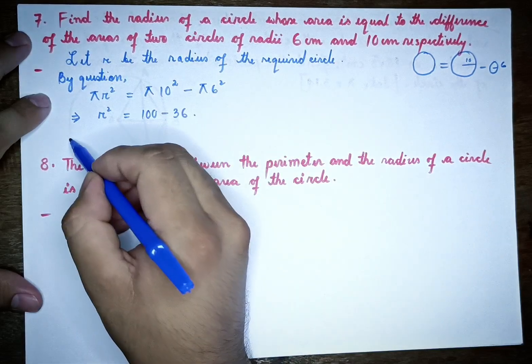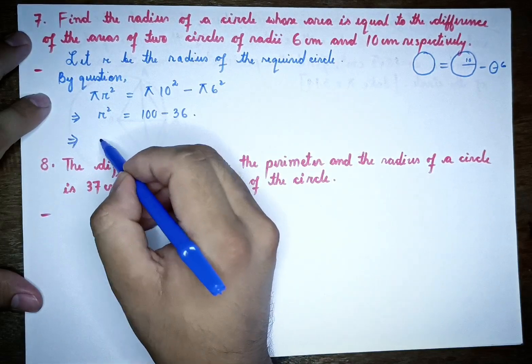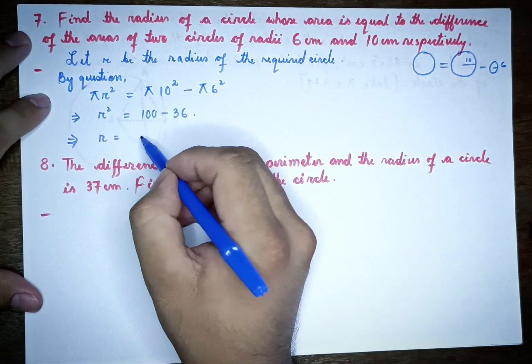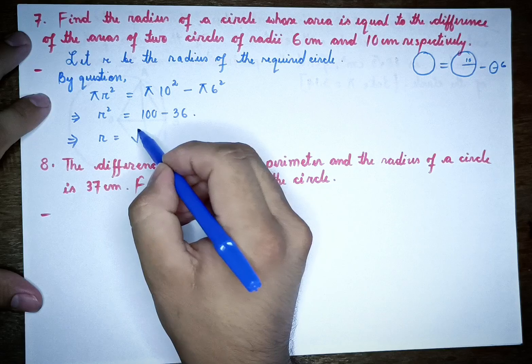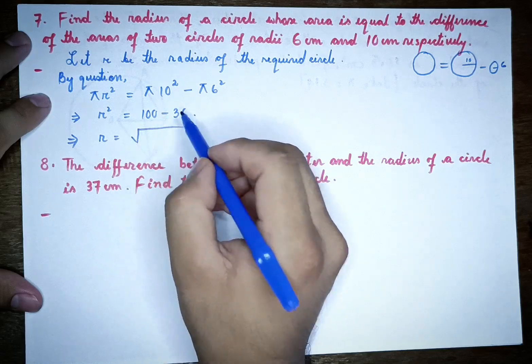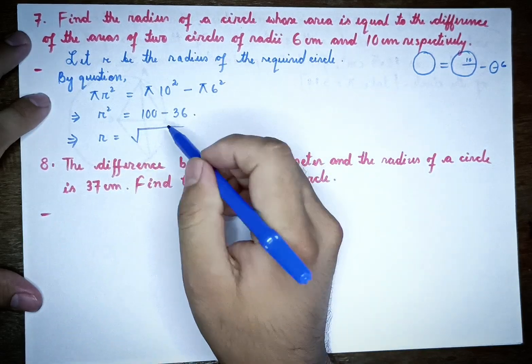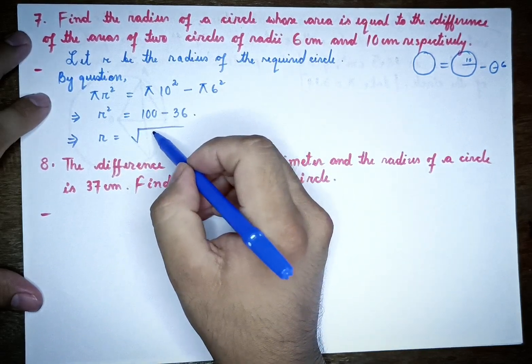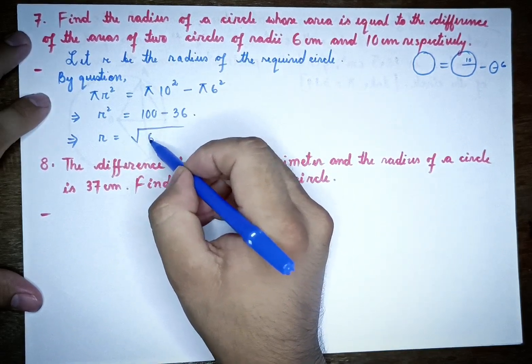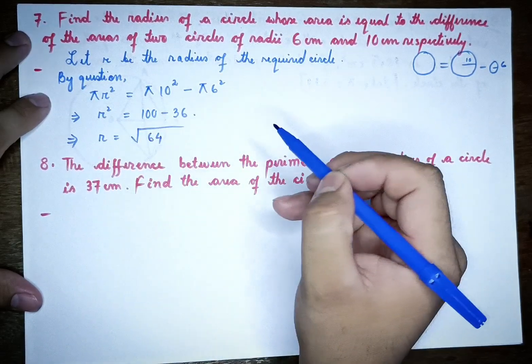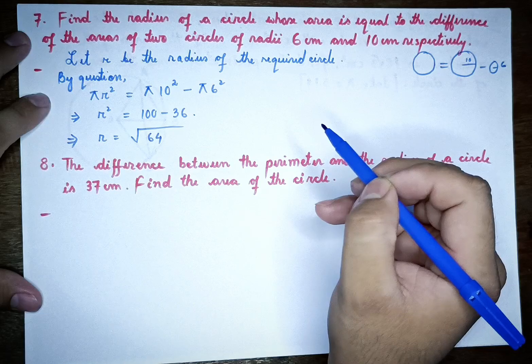This gives us r squared equals 64, which implies r equals root over 64.